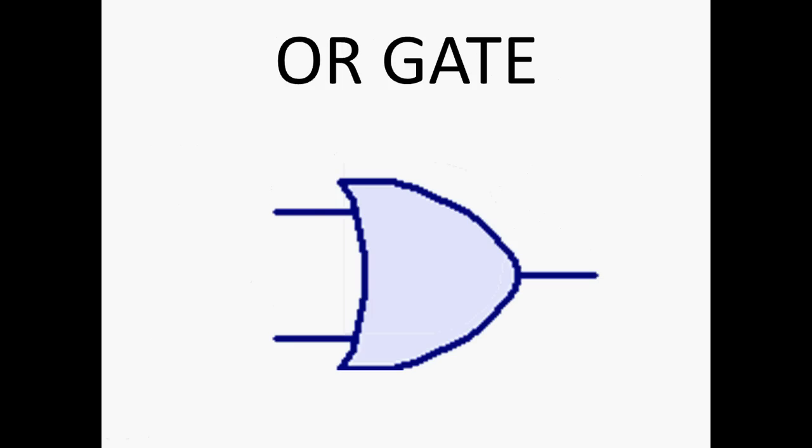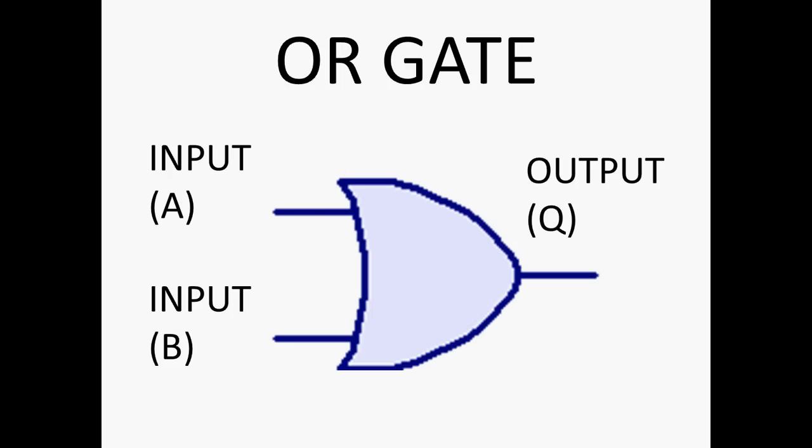This one is an OR gate. This has the output turns on when either A or B or both are on. Again, look at the PowerPoint on logic gates if you don't know enough about this.